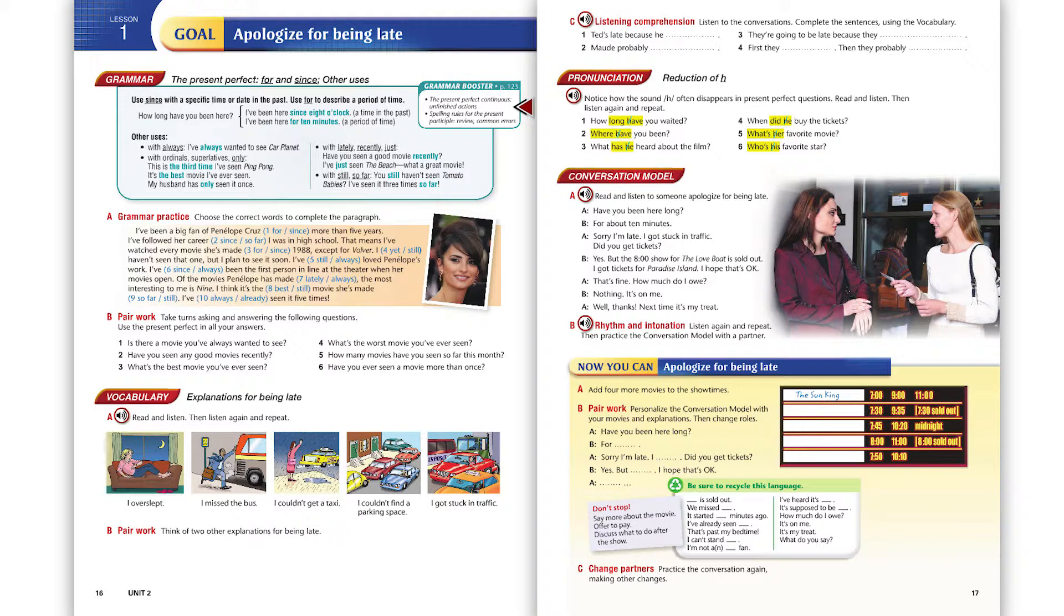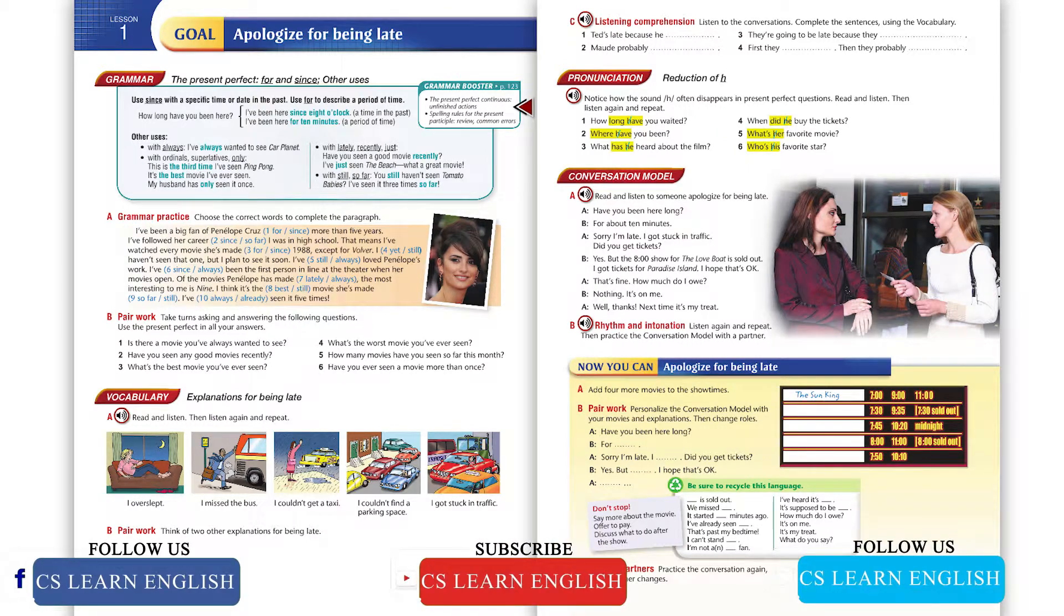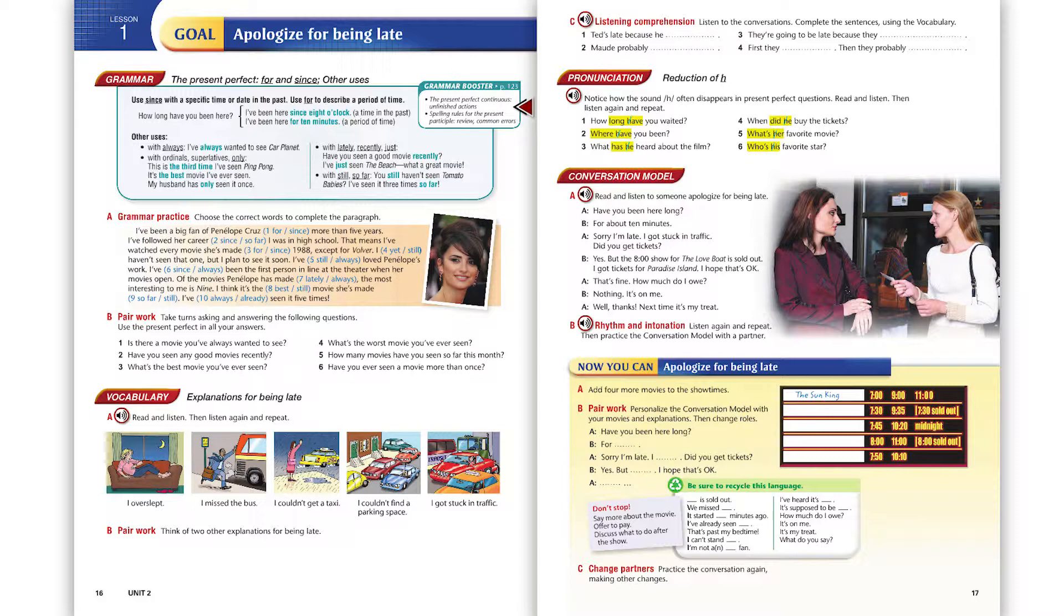Now listen again and repeat. How long have you waited? Where have you been? What has he heard about the film? When did he buy the tickets? What's her favorite movie? Who's his favorite star?